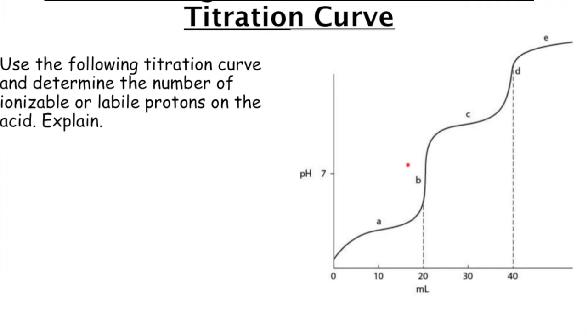So you can count the number of equivalence points, and that will tell you how many protons the acid has. So in this case, in this example, we have a proton coming off there and a proton coming off there. So that means there's two hydrogens on this acid. So a generic formula for this could be like H2A.